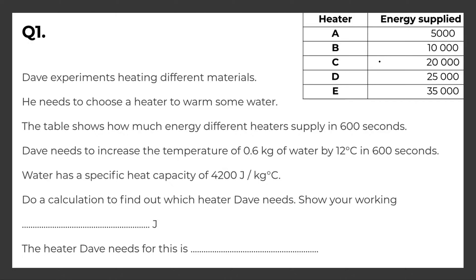Do a calculation to find out which heater Dave needs. Show your working out. So we need to do a calculation over here. To find the thermal energy we would do 0.6 times 12 times 4200. This is just the equation that we saw in our previous video. We just put this into our calculator. This gives us an answer of...